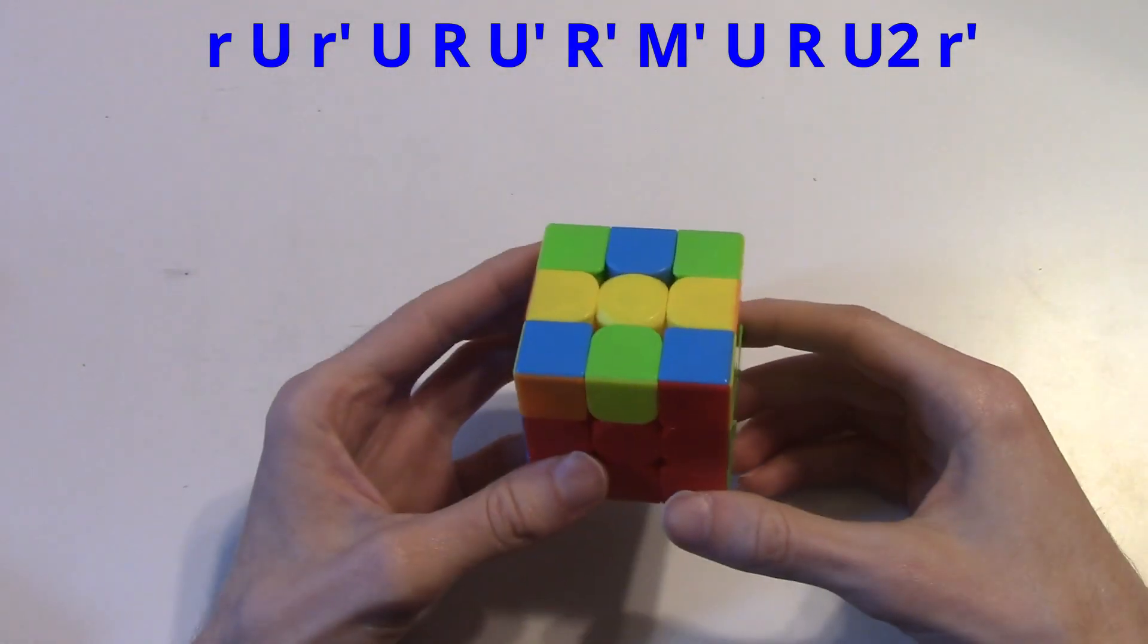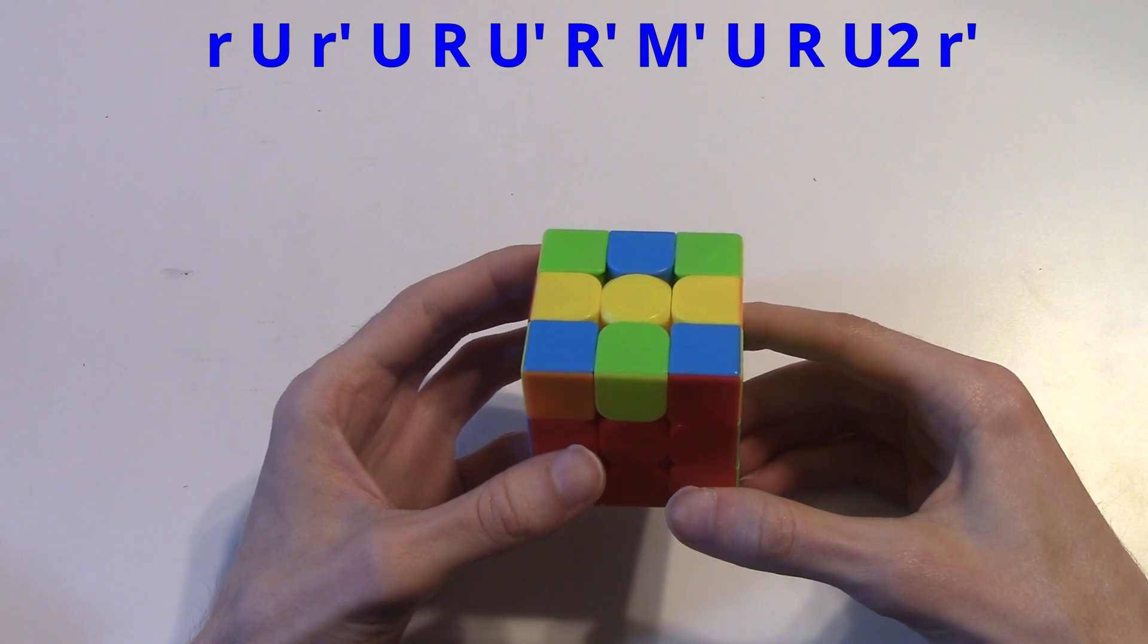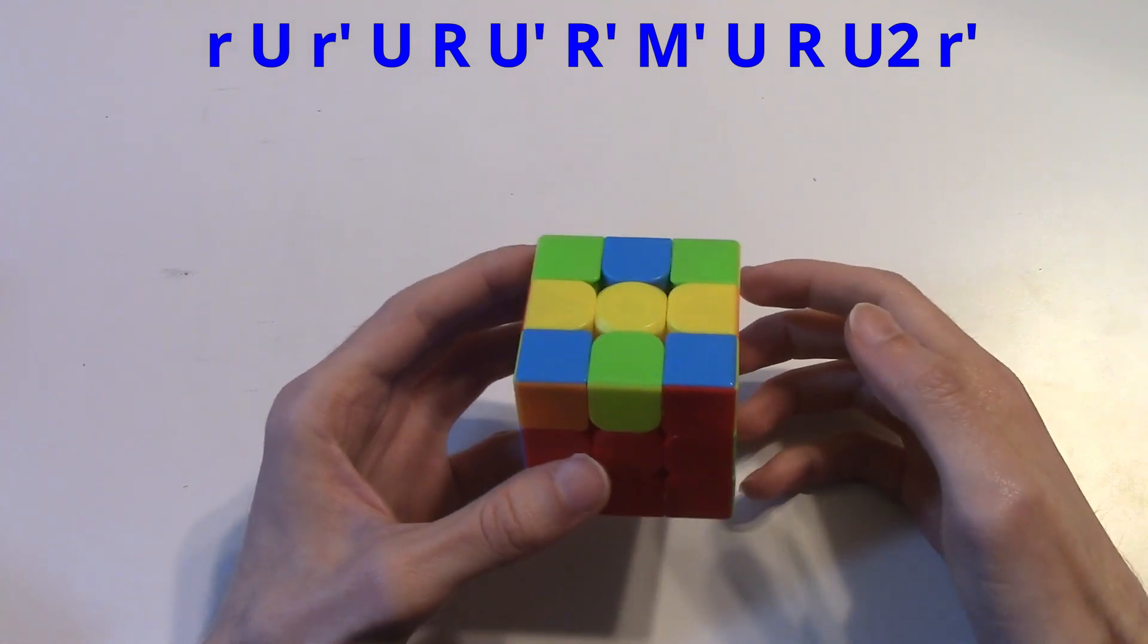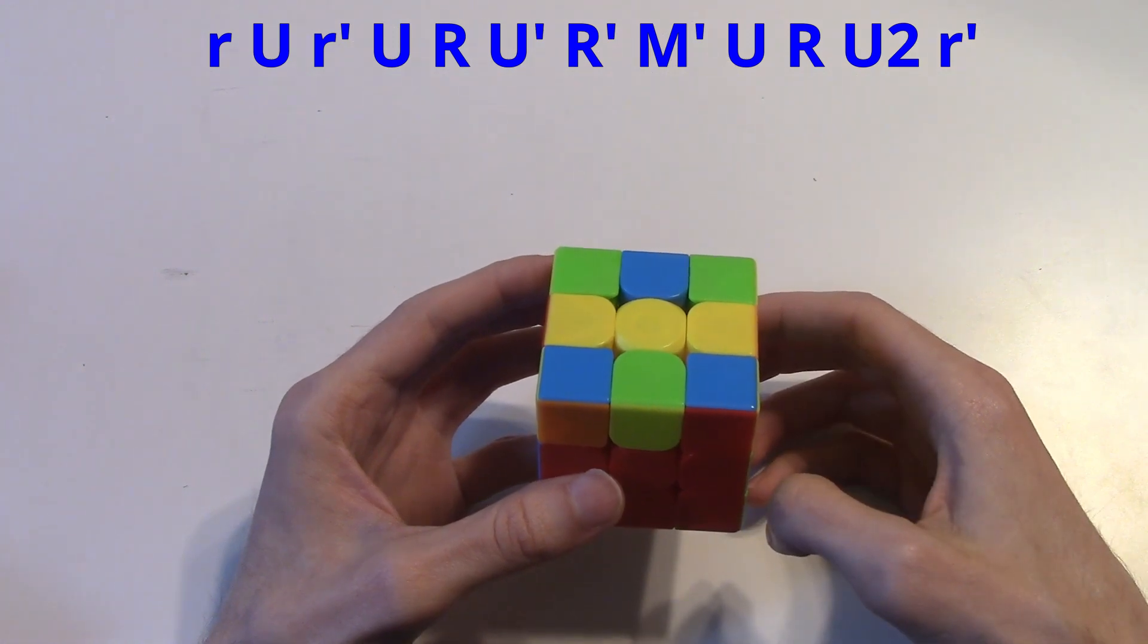So the only difference between a regular double wide soon and this alg is the two r primes. On the first r prime, you're doing a wide move, and on the second r prime, you're doing an m move in the middle.